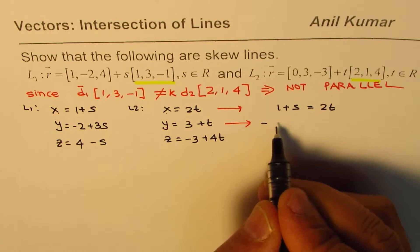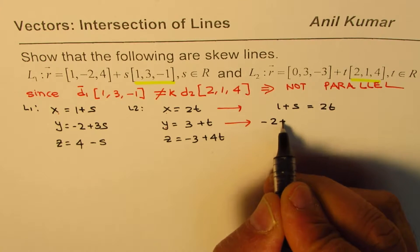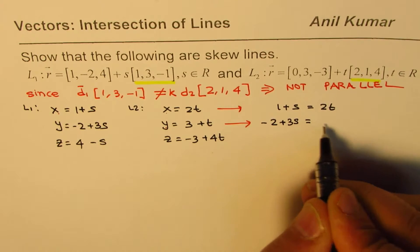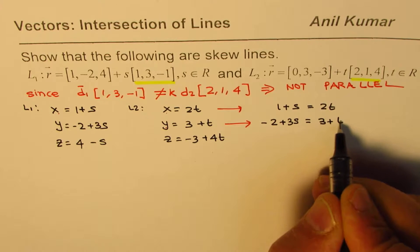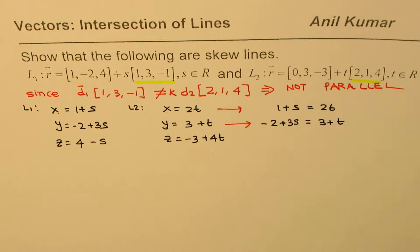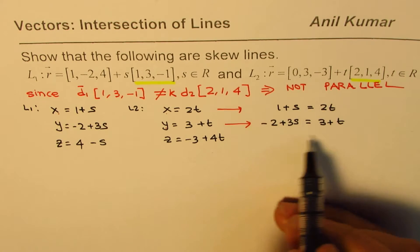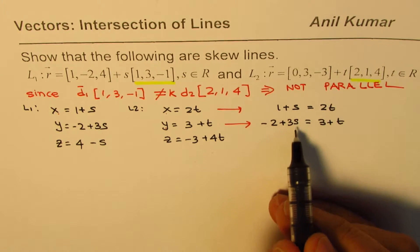Similarly from the second set, if they intersect these y's should be the same. Therefore we get an equation which is minus 2 plus 3s equals 3 plus t. These are the two equations which we have got. We need to solve these equations to find the value of s and t.